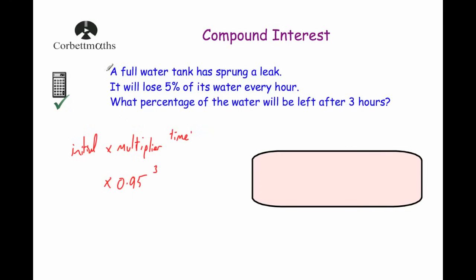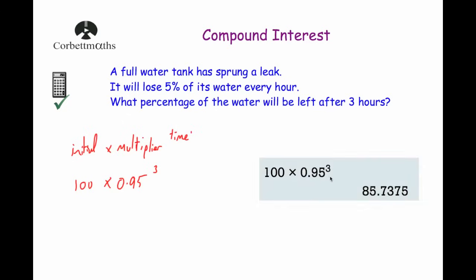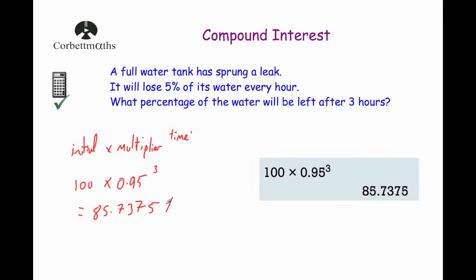We don't know the initial volume, but since the question asks for a percentage and the tank was full, we use 100 as the initial. Typing 100 × 0.95³ into the calculator gives 85.775%. So after three hours, 85.775% of the water remains. If the question had asked how much was lost, we'd subtract that from 100.